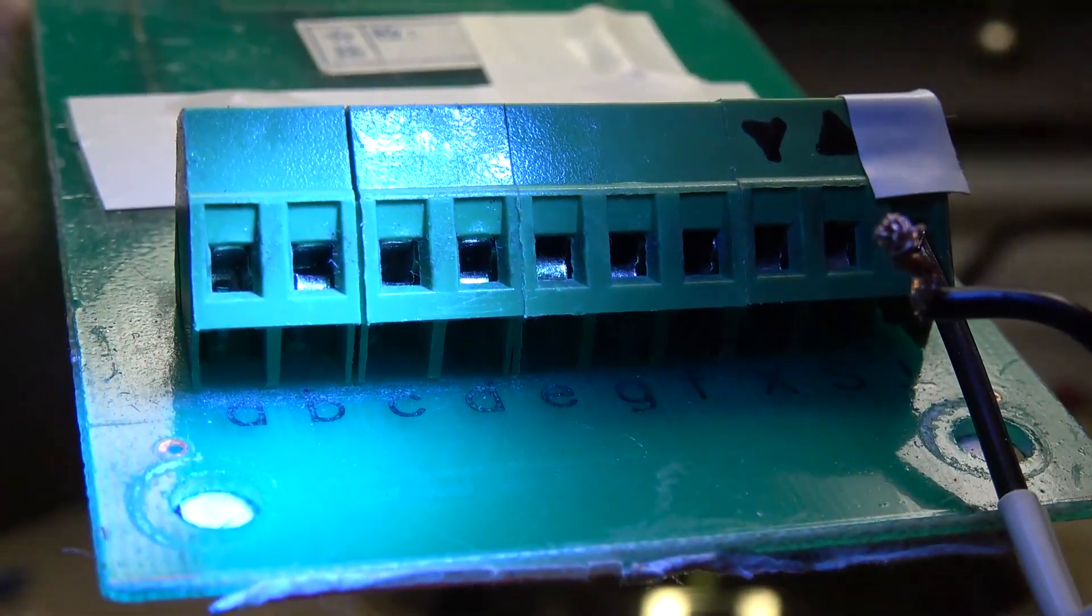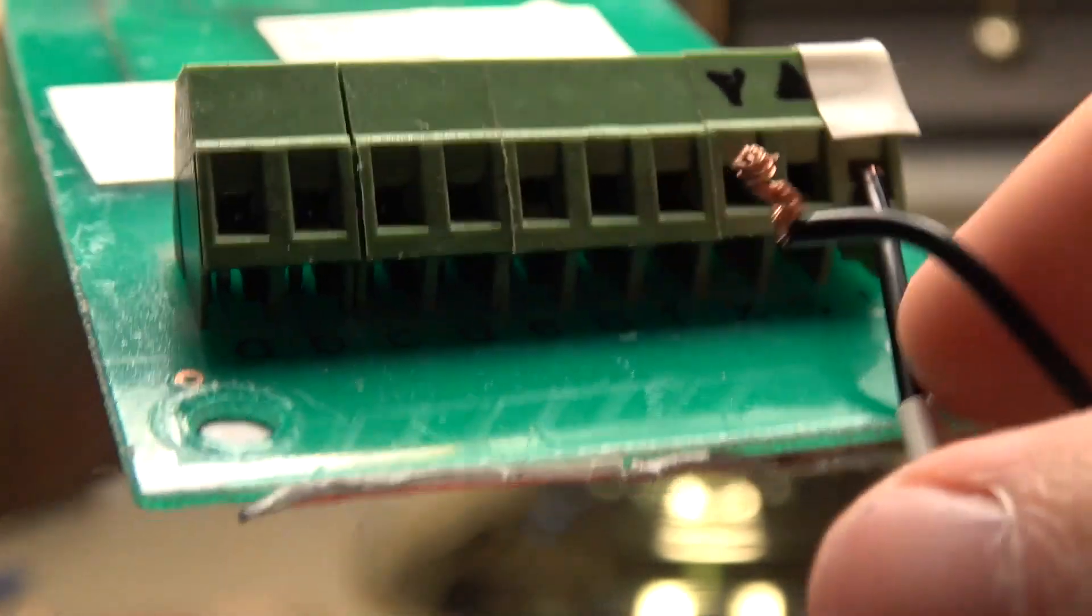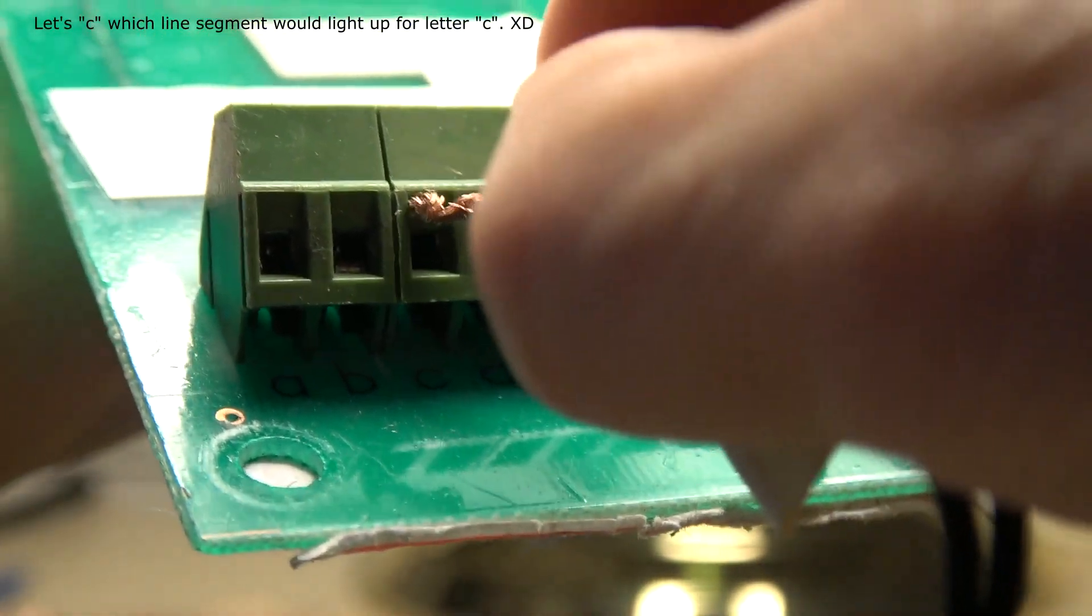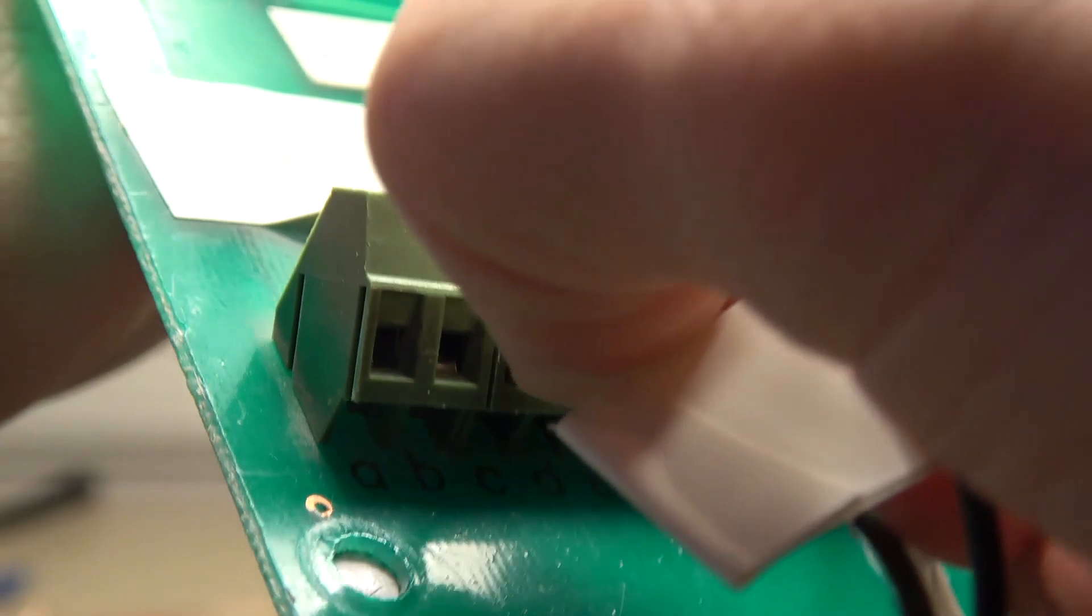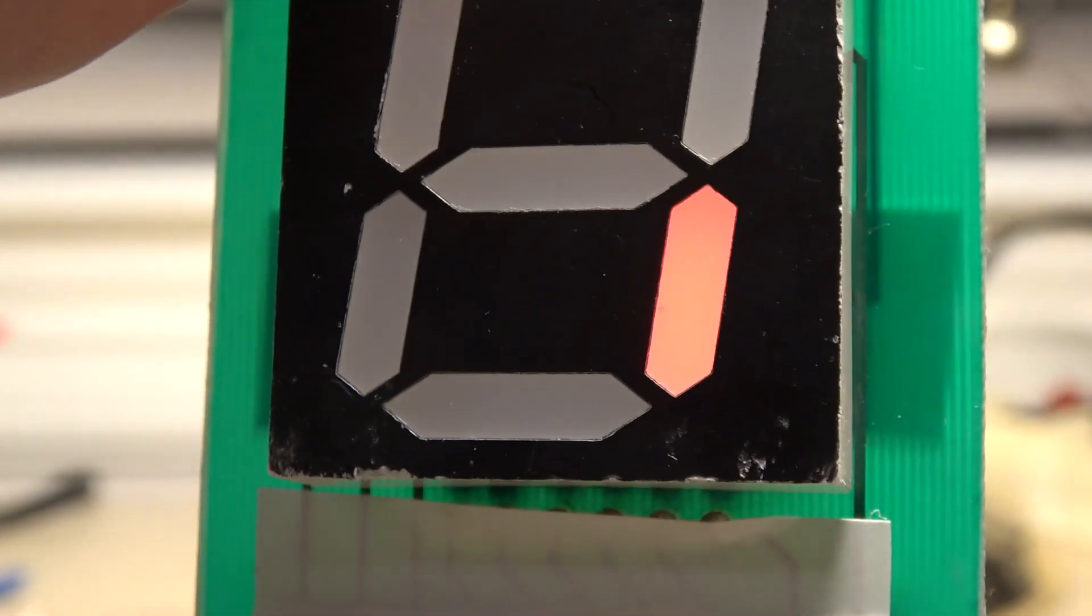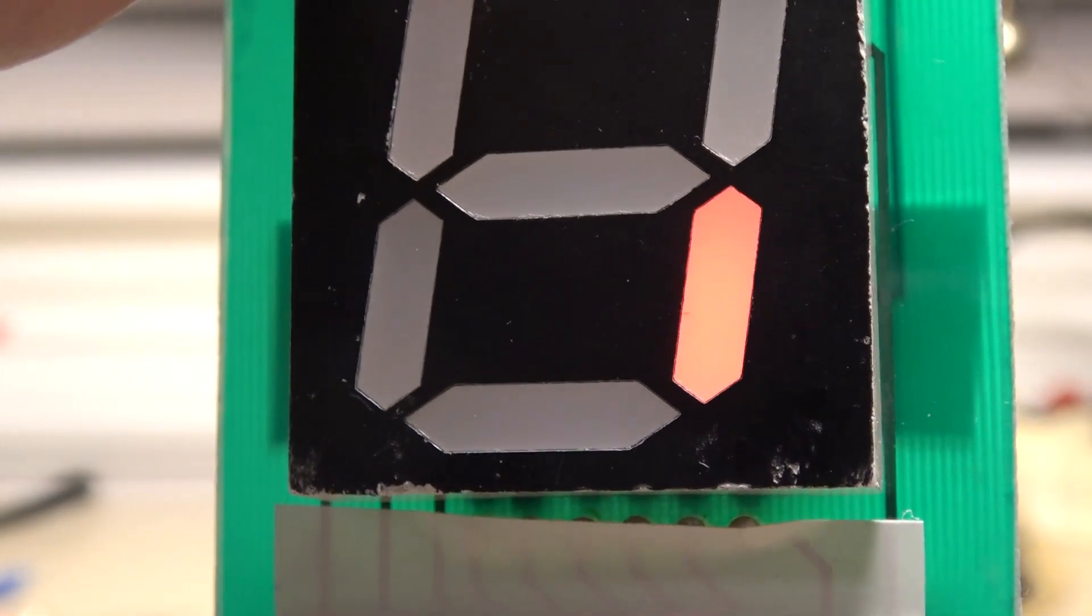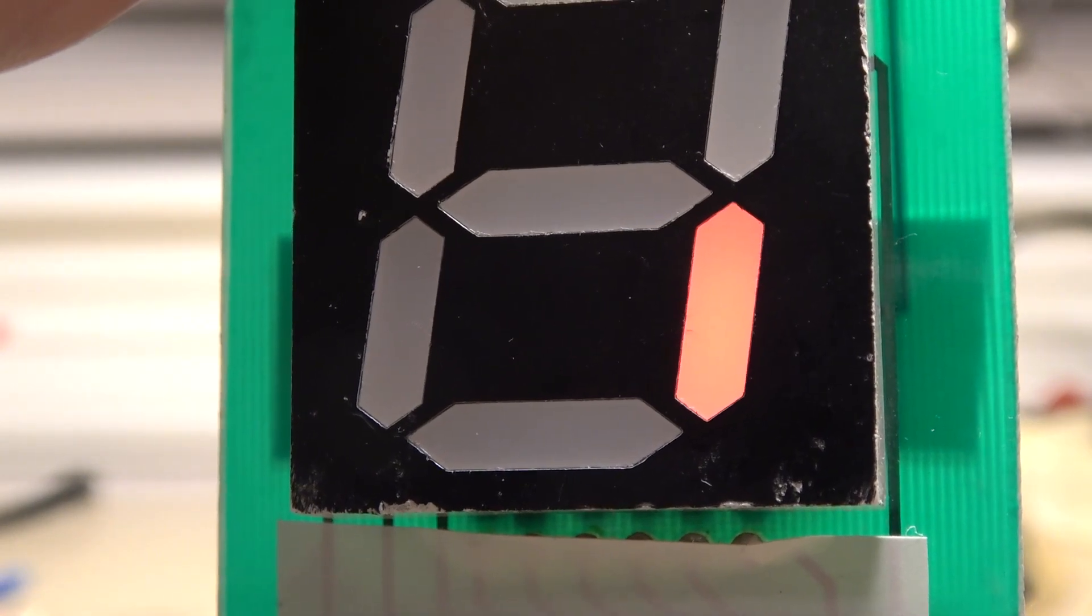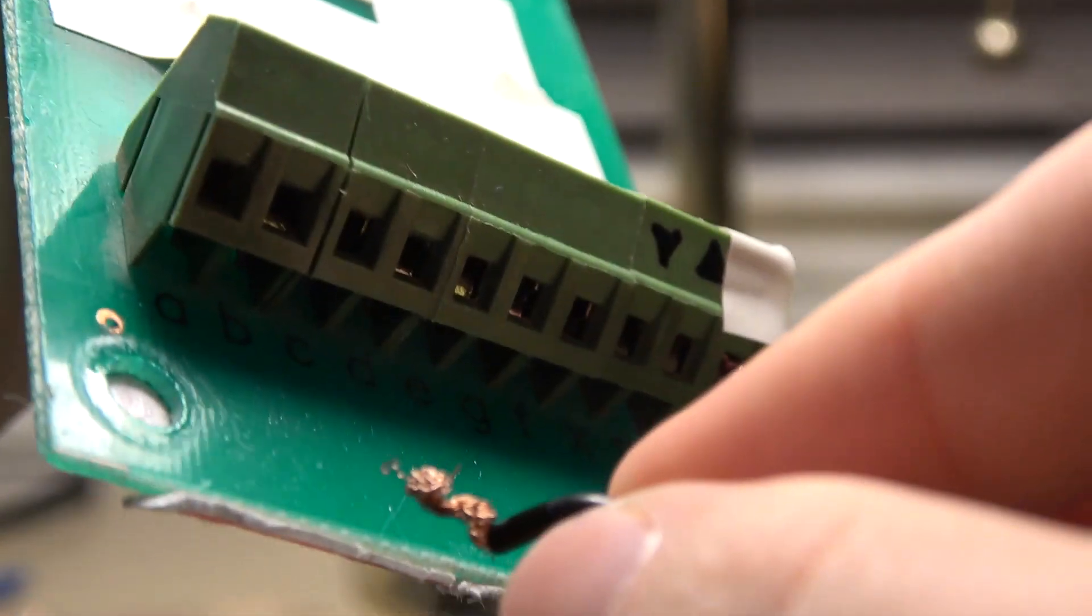Now, going on to is C. Let's see which segment line lights up for letter C. Plug it in. That lights up the lower right-hand segment line. That's for letter C.